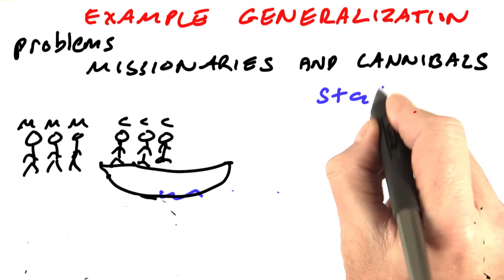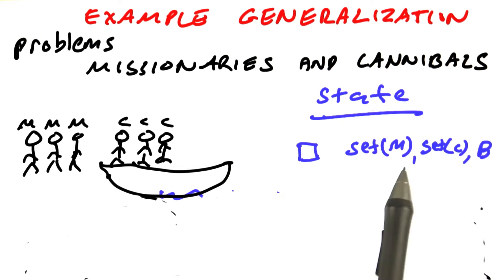Now let's try to come up with a good representation for a state. One possibility would be to have a set of missionaries, a set of cannibals, and a boat. Let's call that a Boolean, yes or no, saying what's on the starting side, and leaving out what's on the other side because we can figure out that. Given that we know we have three missionaries, if there's a set of two on one side, then the other side there must be one.